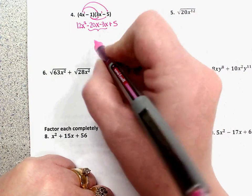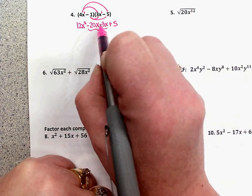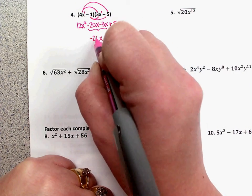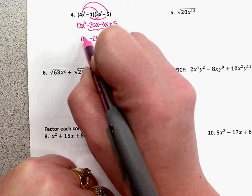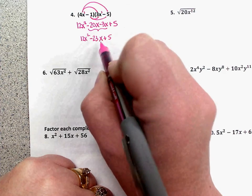So when you add x's to x's, you still have x's. You have negative 20 and negative 3 that add to negative 23x. So this remains 12x squared. This remains plus 5. And when you add x's, you still have an x. So 12x squared minus 23x plus 5.